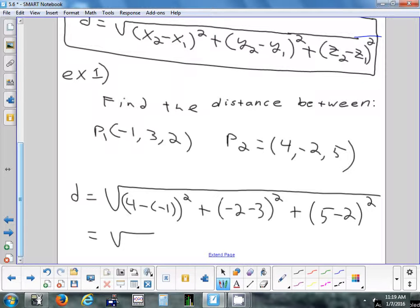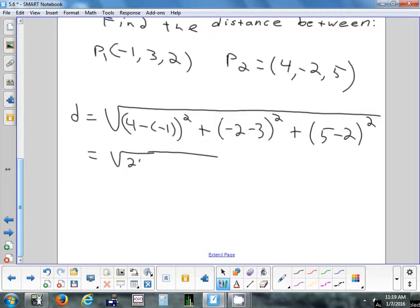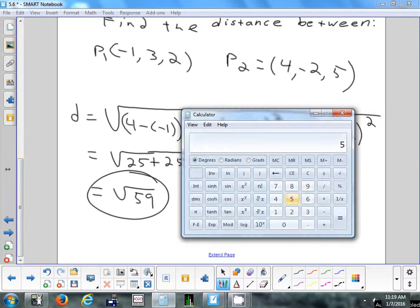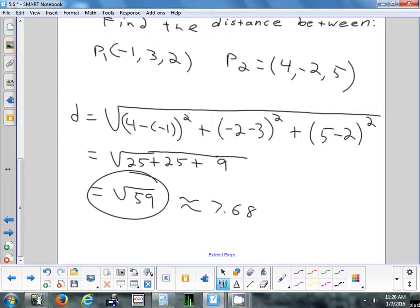So now just do that out and see what we get. Kali, what's 4 minus negative 1? 5. Yep, that's 5 and we square it. We're going to get 25. Becky, what's negative 2 minus 3? Negative 5 and we square it. 25 again. And Brandon, 5 minus 2? 3. Squared? 9. Okay, that's the distance between those two points. If they want it as a decimal, just use your calculator. It's about 7.68 units. Bless you. Any question on finding the distance between two points in 3D?